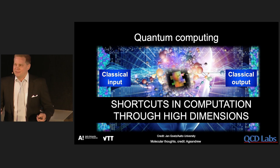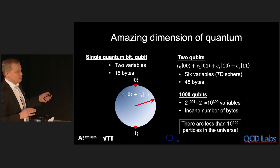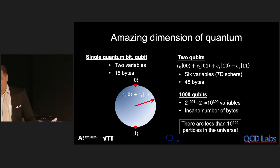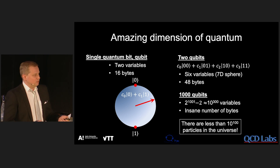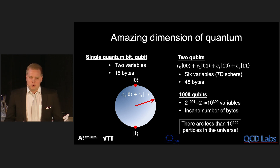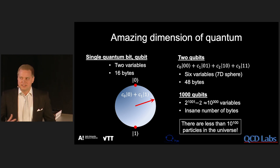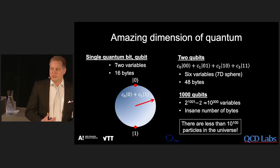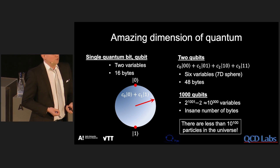So what are these high dimensions? Let's take an example of a single quantum bit, a qubit. It has two basis states called zero and one — these are the states a classical computer can access. However, something called quantum superposition is possible, which means the system can be simultaneously in these two states. These can be described by an arrow on a sphere, where each point on the three-dimensional sphere corresponds to a different quantum state. You have two variables defining this sphere, and if you represent each with a double floating-point number, you need 16 bytes of memory in a classical computer to represent the quantum state.